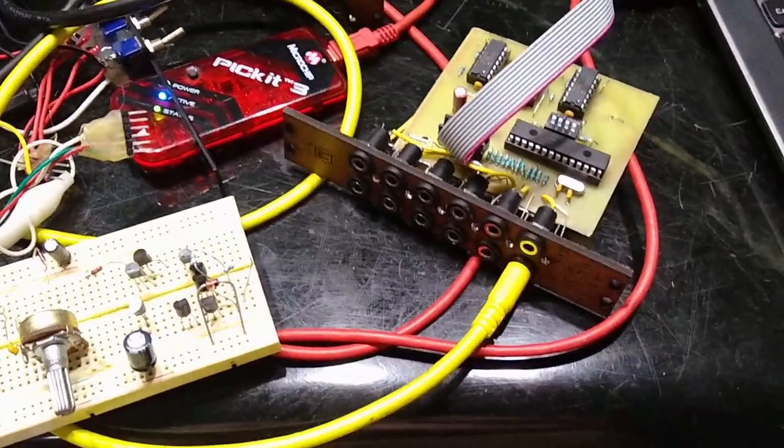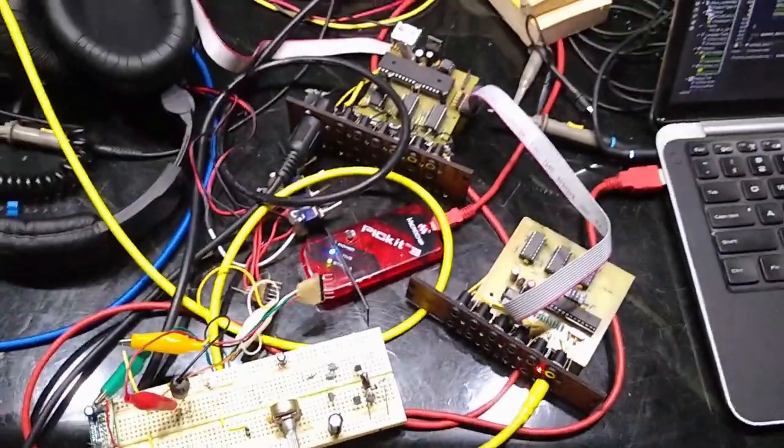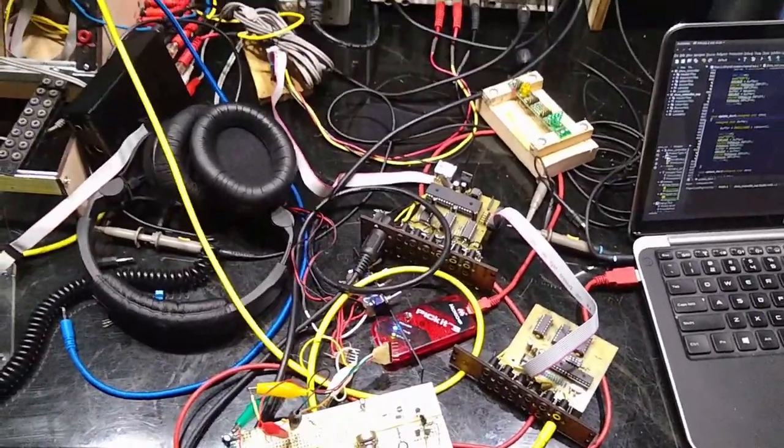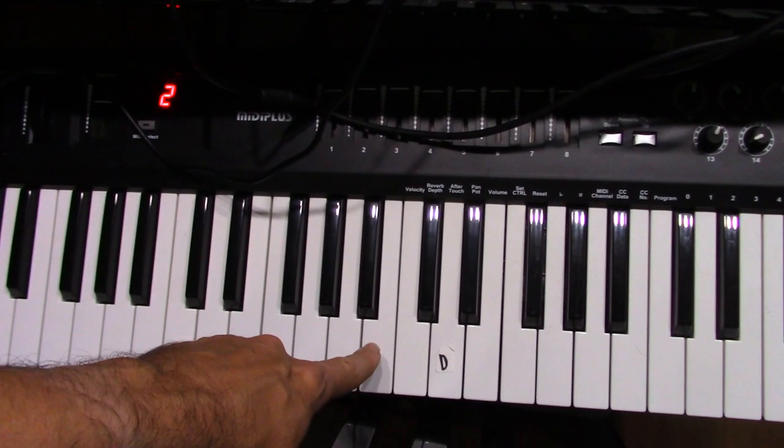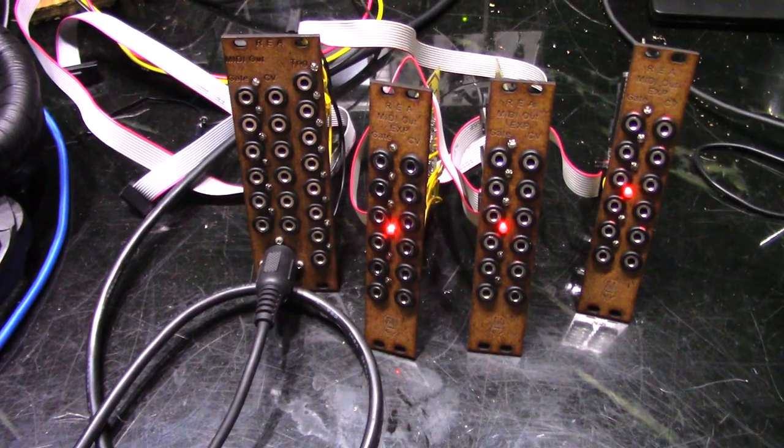Now to see the expansion modules in action. I have them all set to the same channels, the outputs would be the same. But in practice, you would set them three channels apart, to maximize the number of independent channels to work with. Pressing a key on the keyboard, the gate light comes on. The corresponding CV output also changes to match the note depressed.